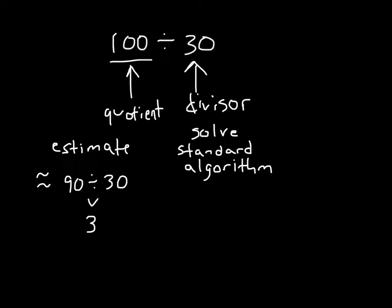Here I'm going to solve with the standard algorithm, 100 divided by 30. Remember, the whole, or what we're dividing, goes on the inside, and our divisor goes on the outside.